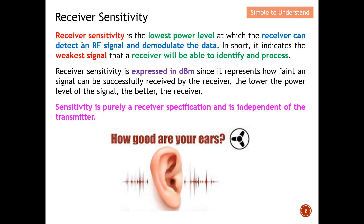Receiver sensitivity is a number representing the lowest power level. Anything better than this receiver sensitivity, I can guarantee that the receiver can detect the signal and demodulate the data. If the signal is worse than the receiver sensitivity, then I can no longer guarantee that the receiver can detect the signal and demodulate the data.